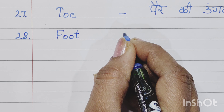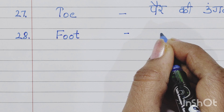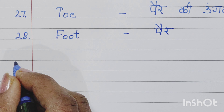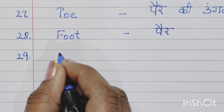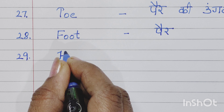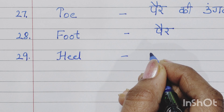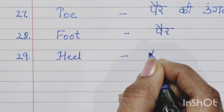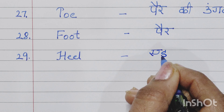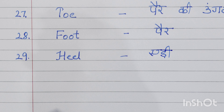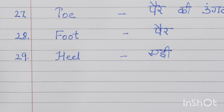Twenty-first is chest, C-H-E-S-T, chest means chati. Twenty-second number is waist, W-A-I-S-T, waist means kamar.